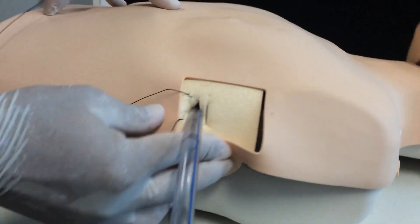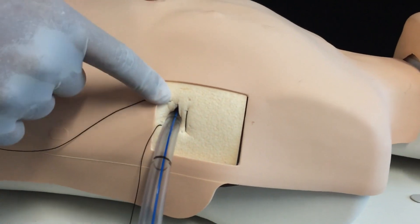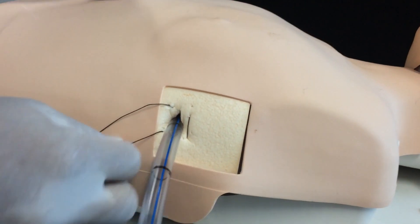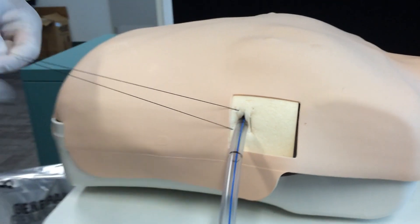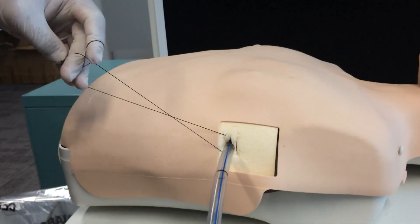So I put a horizontal mattress suture in and gone through over and around. And what you do is then you secure the knot in.